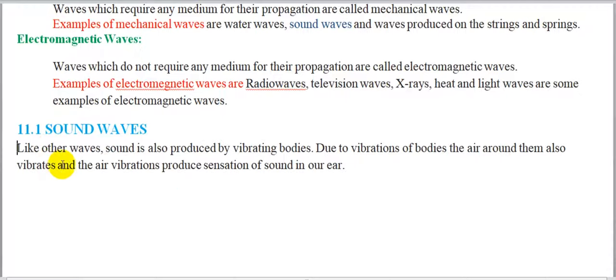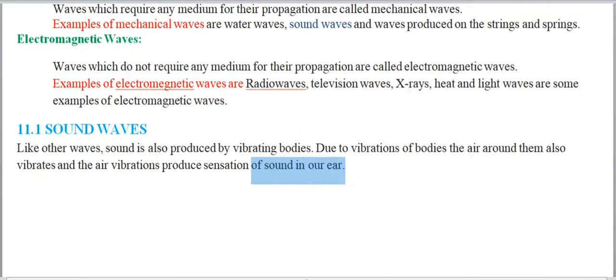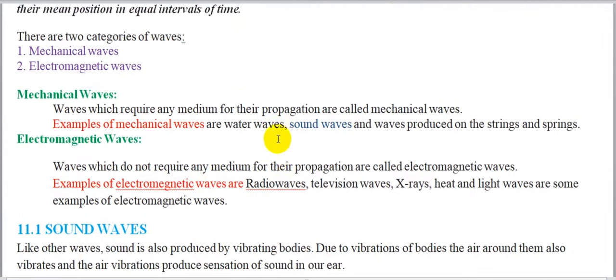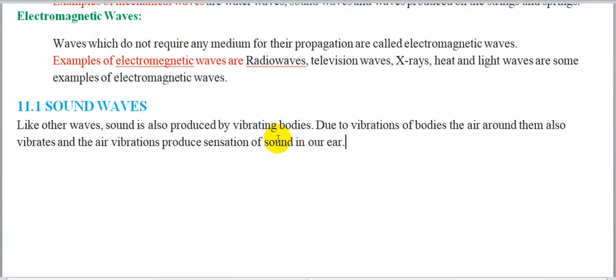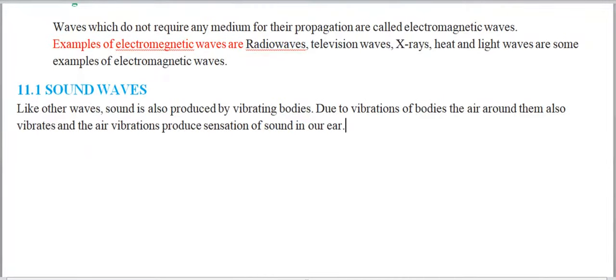Now we describe the first point of chapter number 2: sound waves. What is meant by sound waves? Like other waves, sound is also produced by vibrating bodies. Due to the vibrations of bodies, the air around them also vibrates, and these air vibrations produce the sensation of sound in our ears. This means that our sound waves cause vibrations in the air particles around us, transferring energy from one place to another, which we hear through our ears.